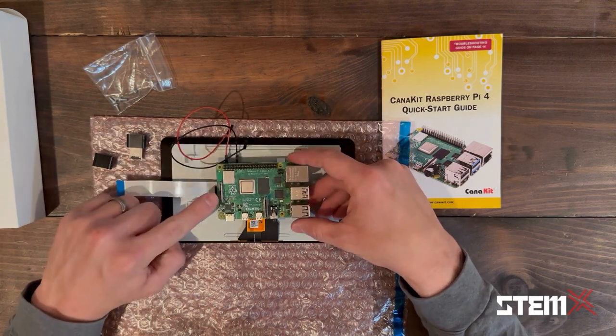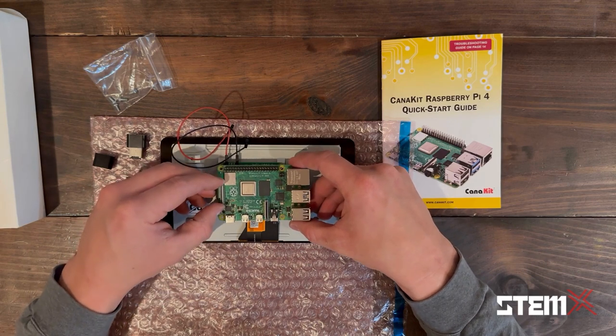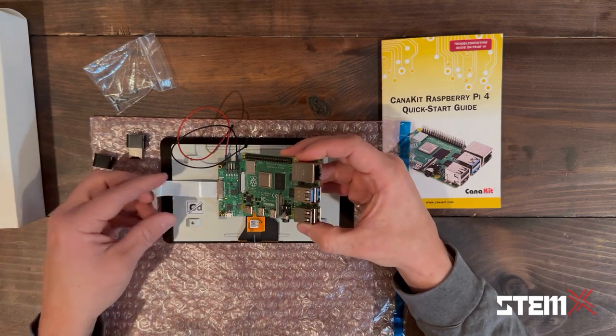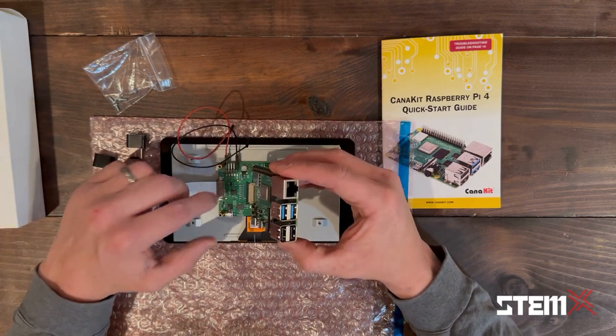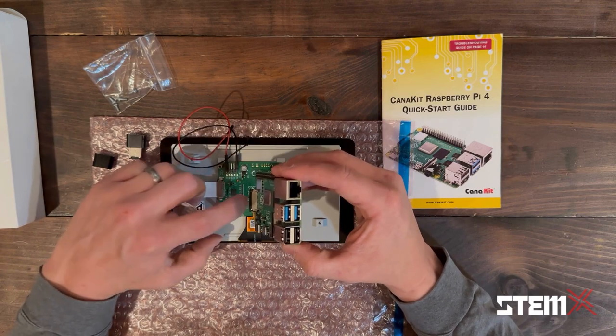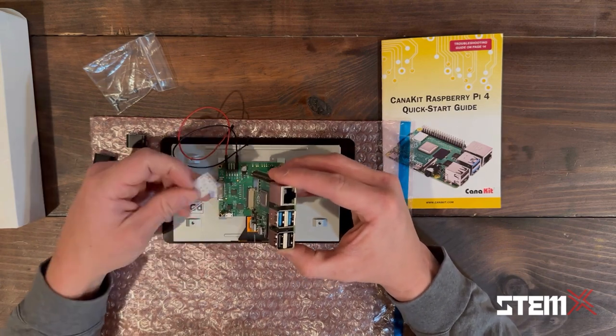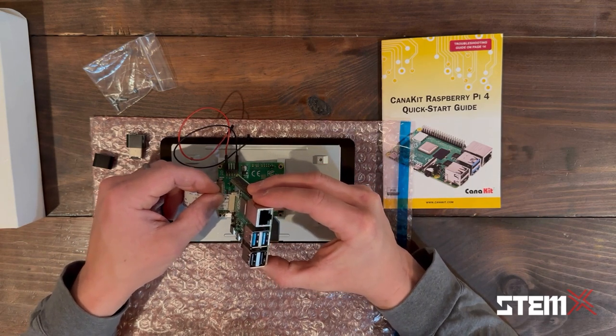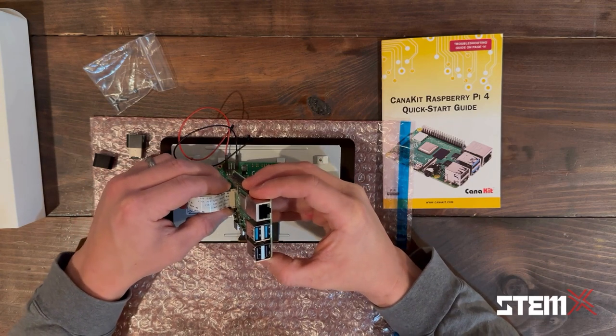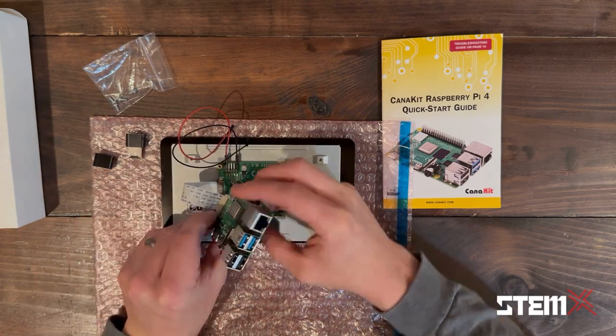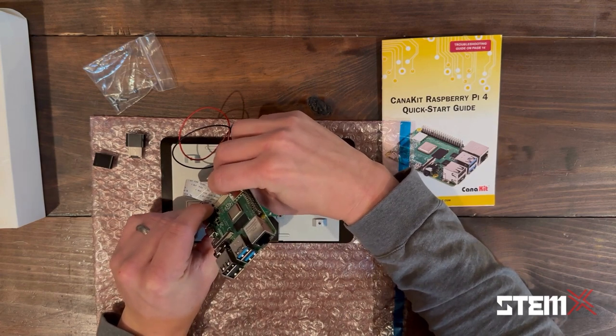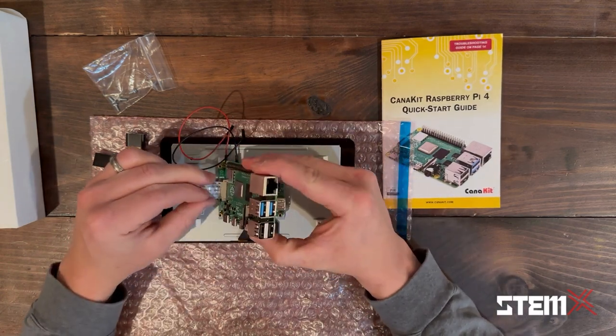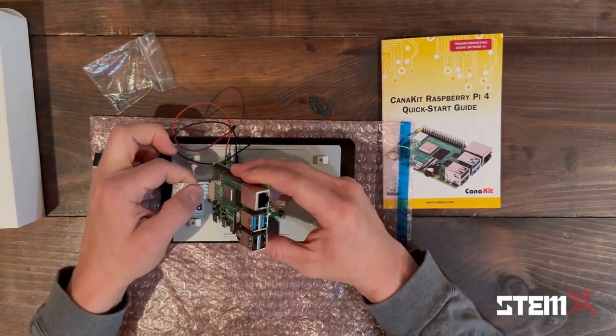We're going to find the ribbon cable connector at the foot of the board here and gently slide out the black connector. And then we're going to slide in the ribbon connector. So the silver contacts will face the white contact board. Slide that in just like you did with the control board on the screen. Slide it all the way in until it stops and then gently slide the black connector clip back down. Some light tension, make sure that it's seated properly.